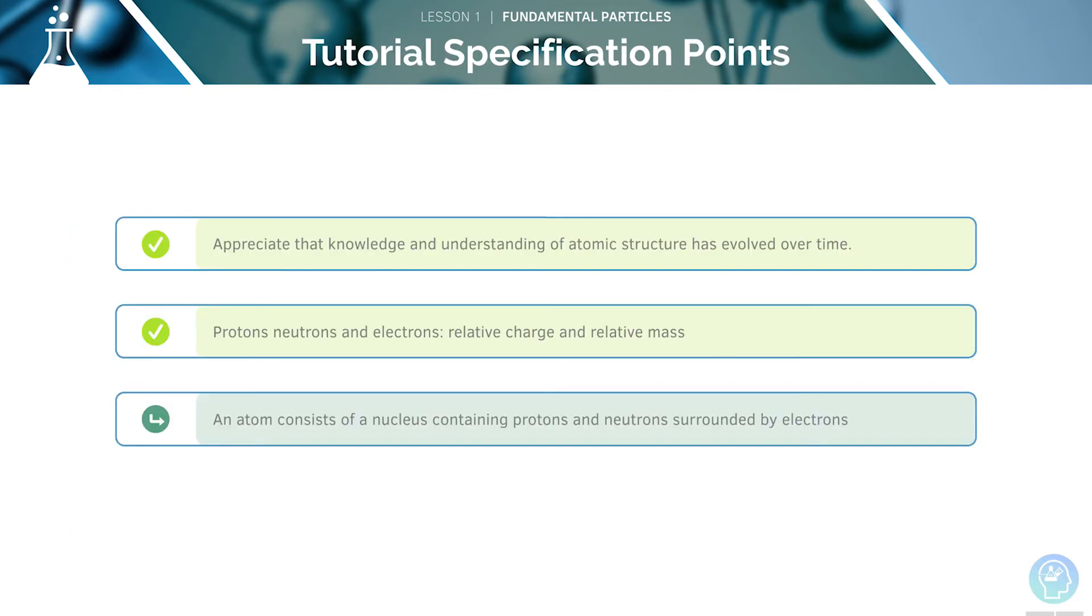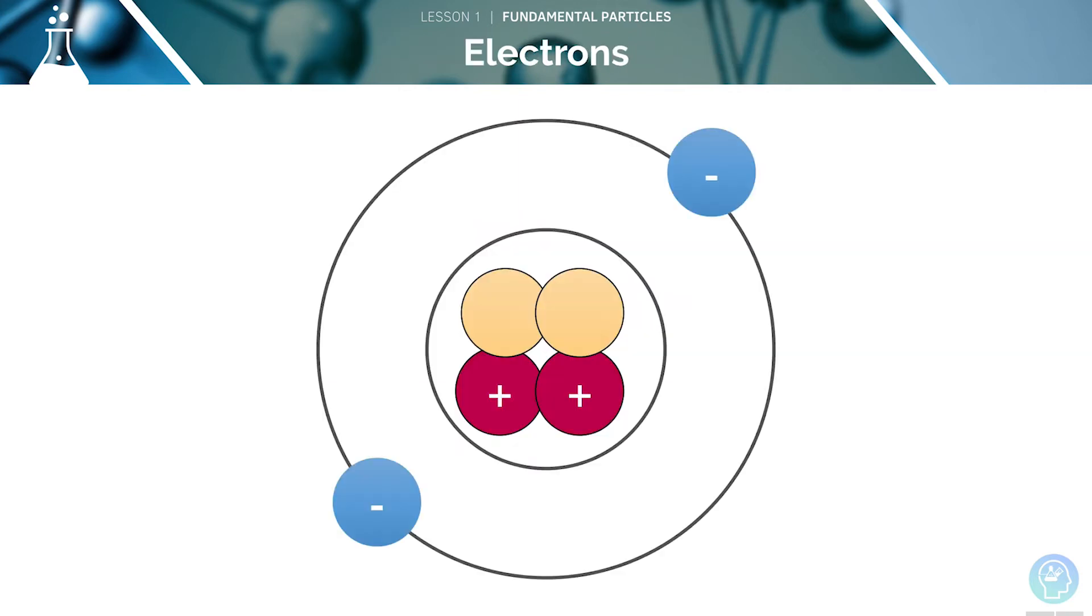We'll now move on to covering our final spec point, which concerns the overall structure of an atom. We'll be putting together all the knowledge that we've just learnt. From this diagram, we can see that the electrons are found around the outside of the nucleus.